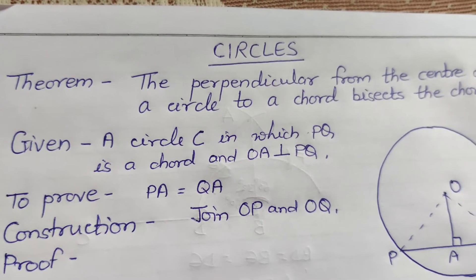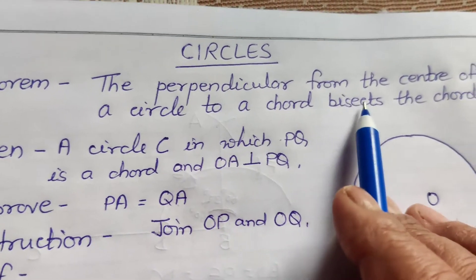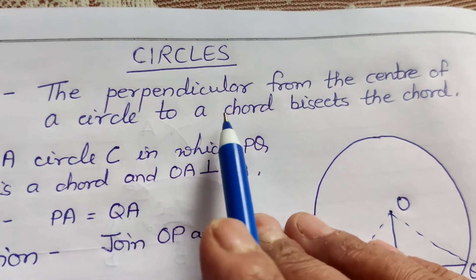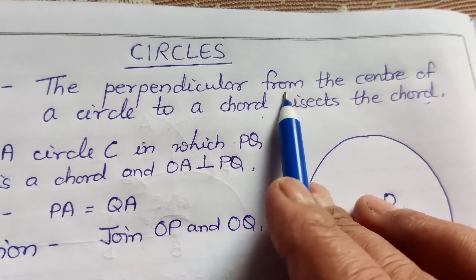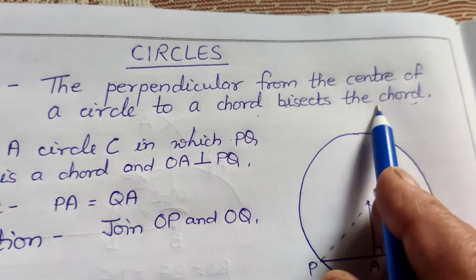A theorem related to the chapter circles for class 9. The theorem is: the perpendicular from the center of a circle to a chord bisects the chord.